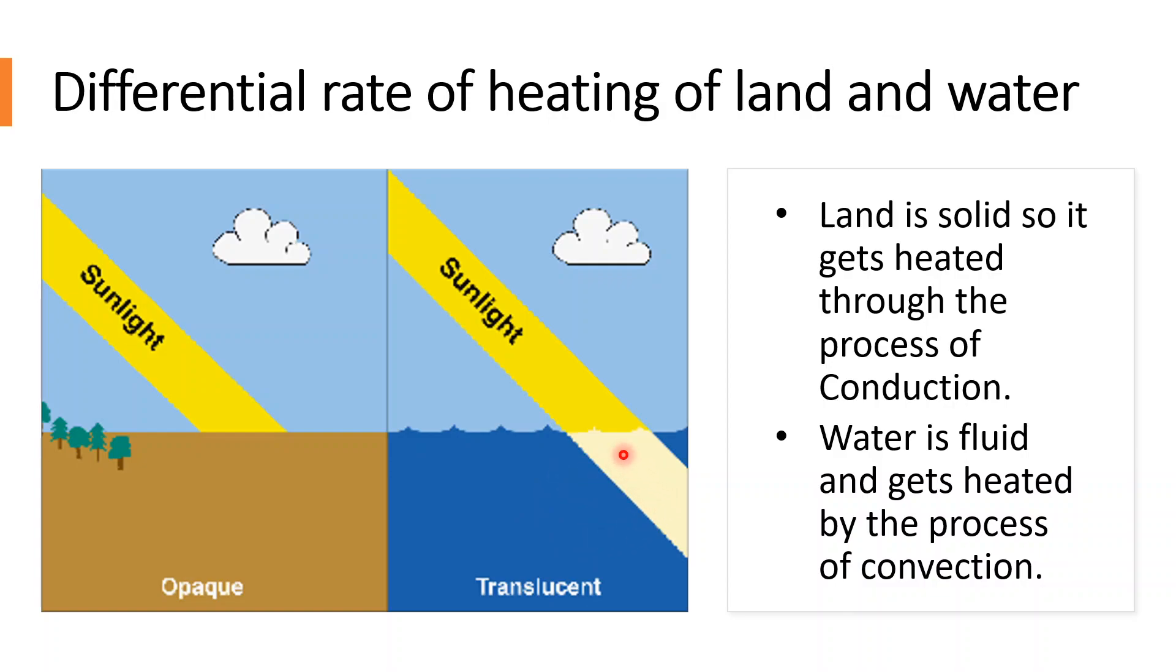We also find that the thin surface layer is rapidly and intensely heated over the land by insolation. While the water bodies take more time to get heated because a larger area needs to be heated by the same amount of sunlight.